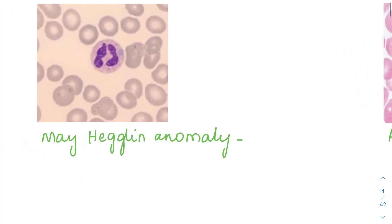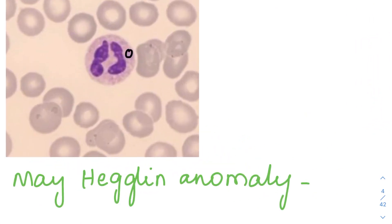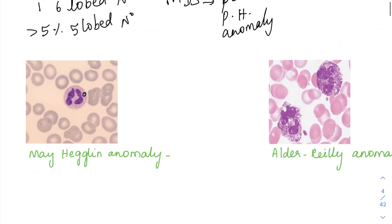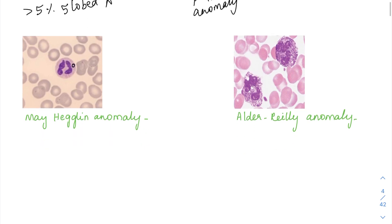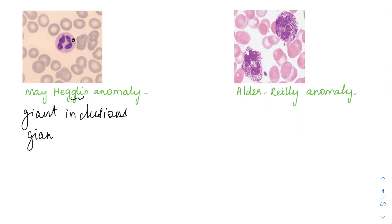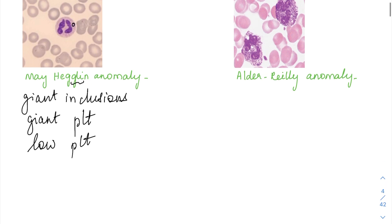The next image shows neutrophils with a light basophilic inclusion visible inside — this is called May-Hegglin anomaly. In May-Hegglin anomaly, you can have three things, remembered using the mnemonic GLI: G for giant inclusions in neutrophils, giant platelets (low platelets), and L for low platelets, and I for inclusions. So giant platelets, low platelets, and giant inclusions in the neutrophils are seen in May-Hegglin anomaly.